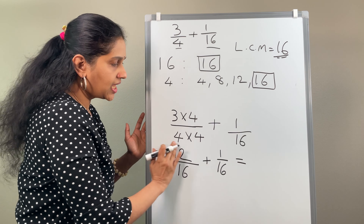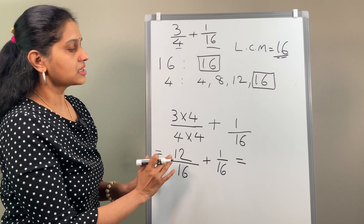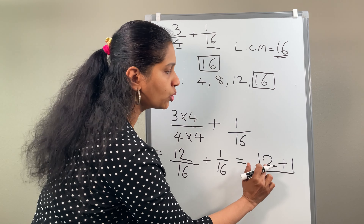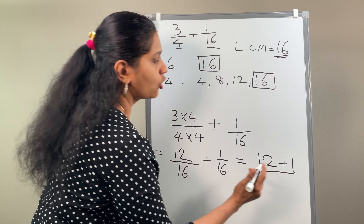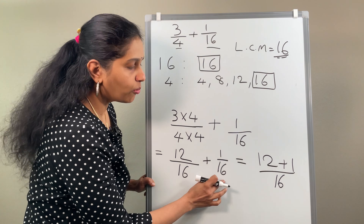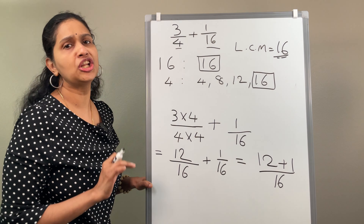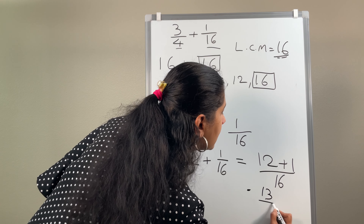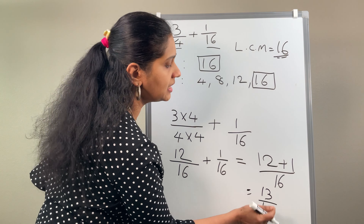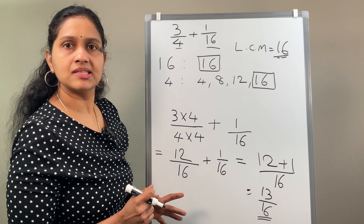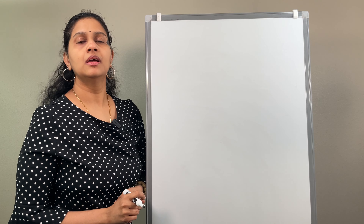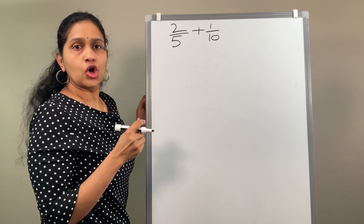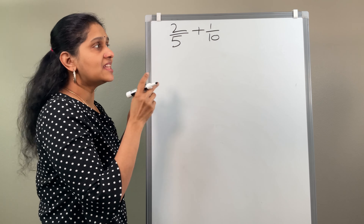What is 3 times 4? That is 12 by 16, plus 1 by 16. So step 1 we found the LCM, step 2 we rearranged, and now step 3 is adding the numerators. Since the denominators are the same, you can simply write 12 plus 1 over the common denominator 16. What is 12 plus 1? That is 13 by 16. That is the answer. You cannot simplify 13 by 16, so just leave it as such.